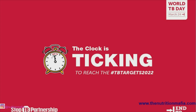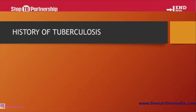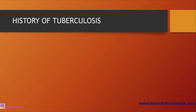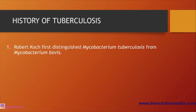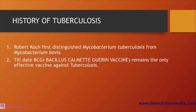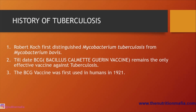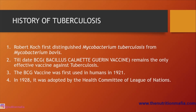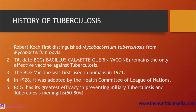The history of tuberculosis: Robert Koch first distinguished Mycobacterium tuberculosis from Mycobacterium bovis. To date, BCG — that is, Bacillus Calmette-Guérin vaccine — remains the only effective vaccine against tuberculosis. The BCG vaccine was first used in humans in 1921, and in 1928 it was adopted by the Health Committee of the League of Nations.